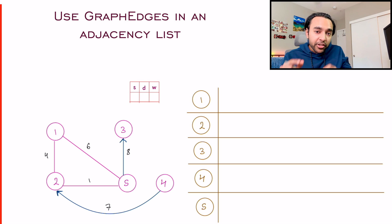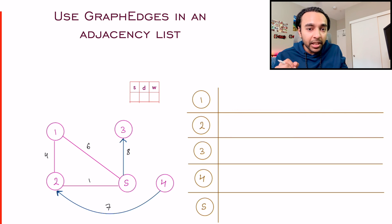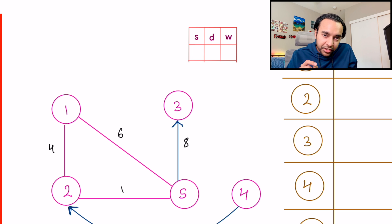And for each of these vertices, instead of keeping a linked list, I am going to keep all the edges associated over here. So what does that mean? So let us go step by step.